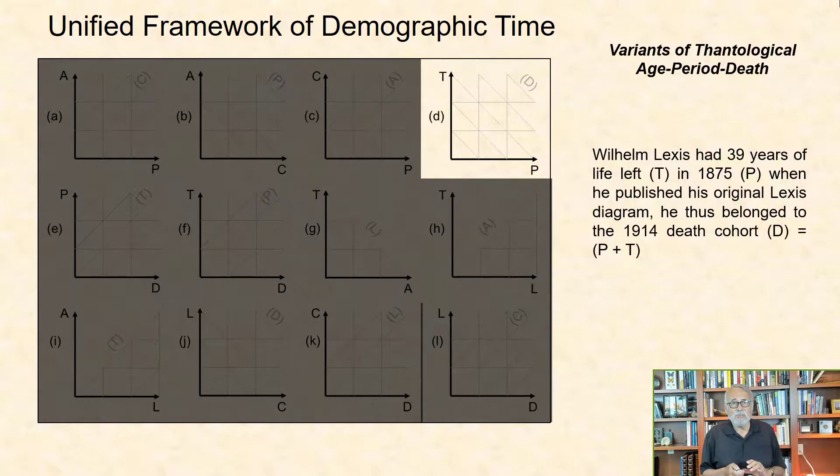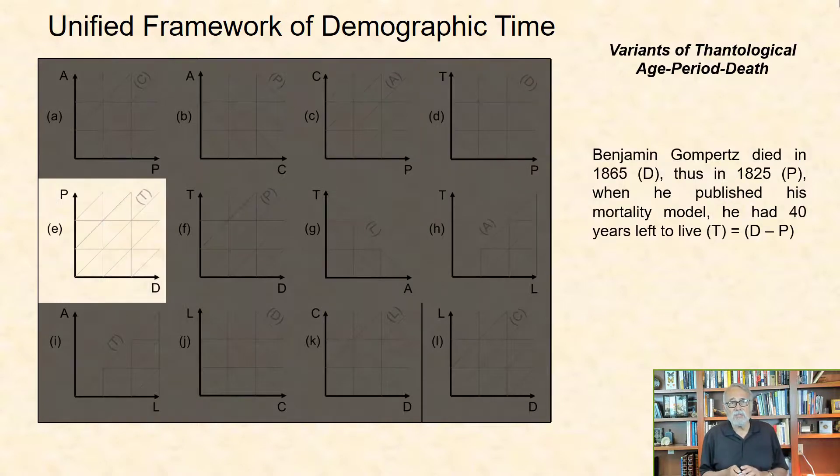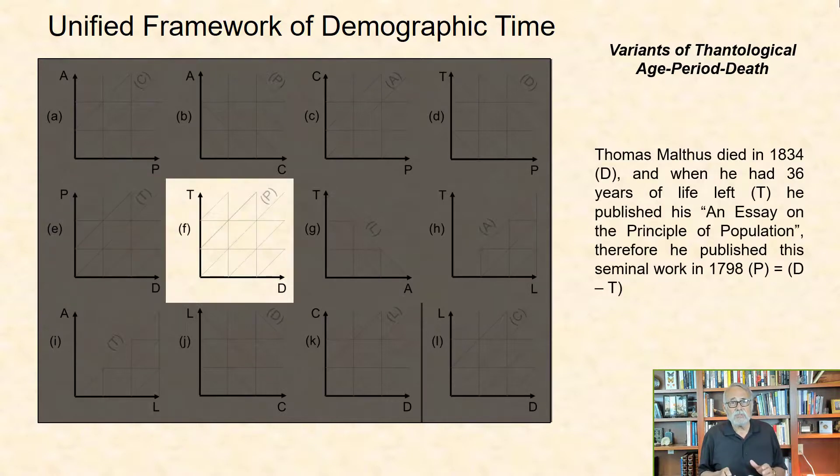Variants of Thanatological Age, Period, and Death Cohort: Wilhelm Lexis had 39 years of life left in 1875 when he published his original Lexis diagram. He thus belonged to the 1914 death cohort. These lines are orthogonal, that is, slope downward to lifelines because as time to death decreases, calendar date increases. Benjamin Gompertz died in 1865, thus in 1825 when he published his mortality model he had 40 years left to live. Thomas Malthus died in 1834 and when he had 36 years of life left, he published his An Essay on the Principle of Population. Therefore, he published this seminal work in 1798.